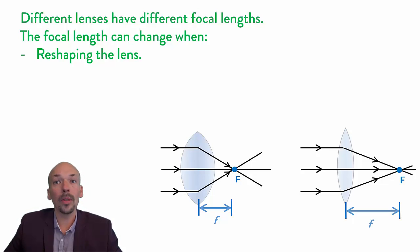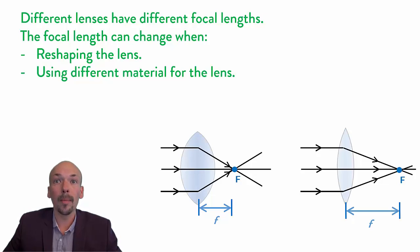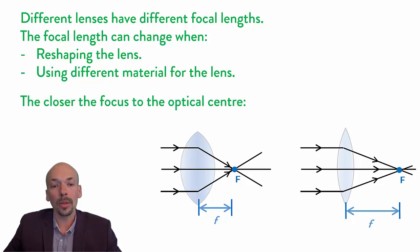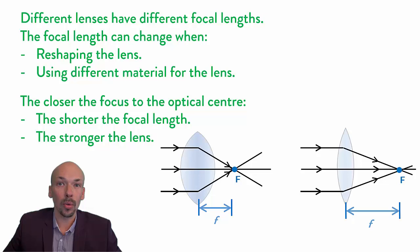You can also use different materials to change the focal length. For instance, diamond, water, plastic, and glass will all produce lenses with different focal lengths. The closer the focus is to the optical center, the shorter the focal length and the stronger the lens.